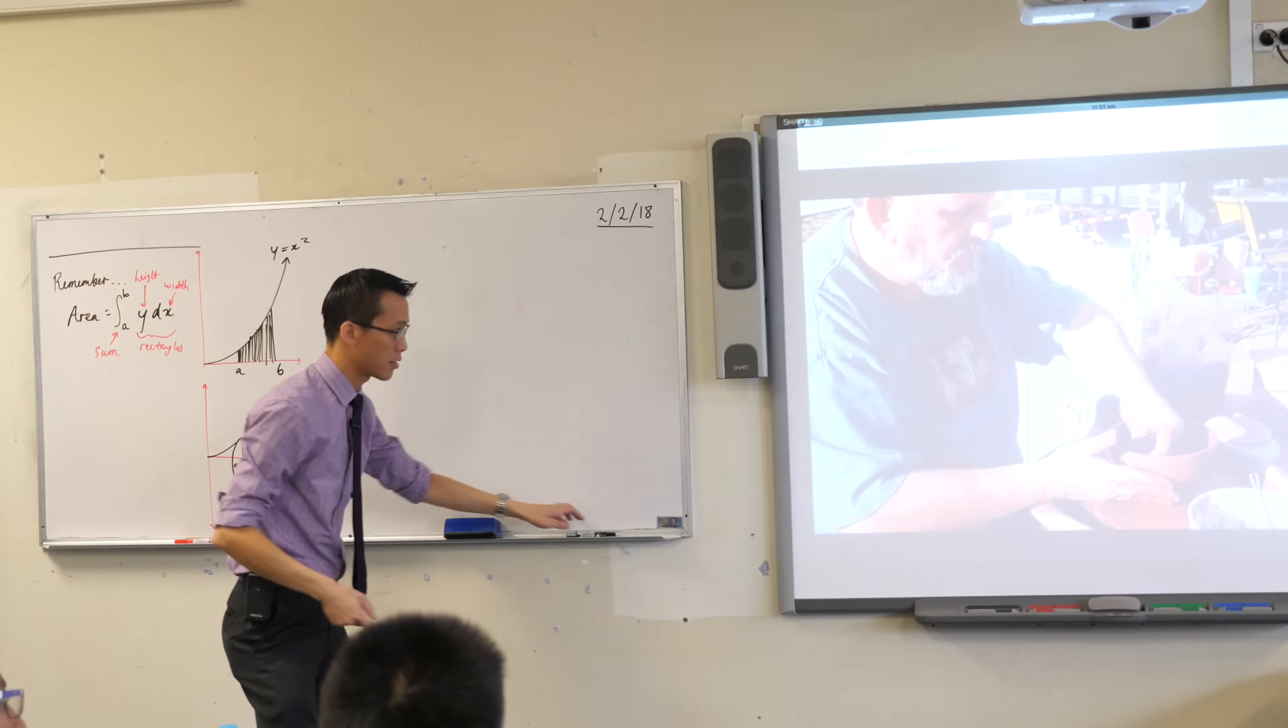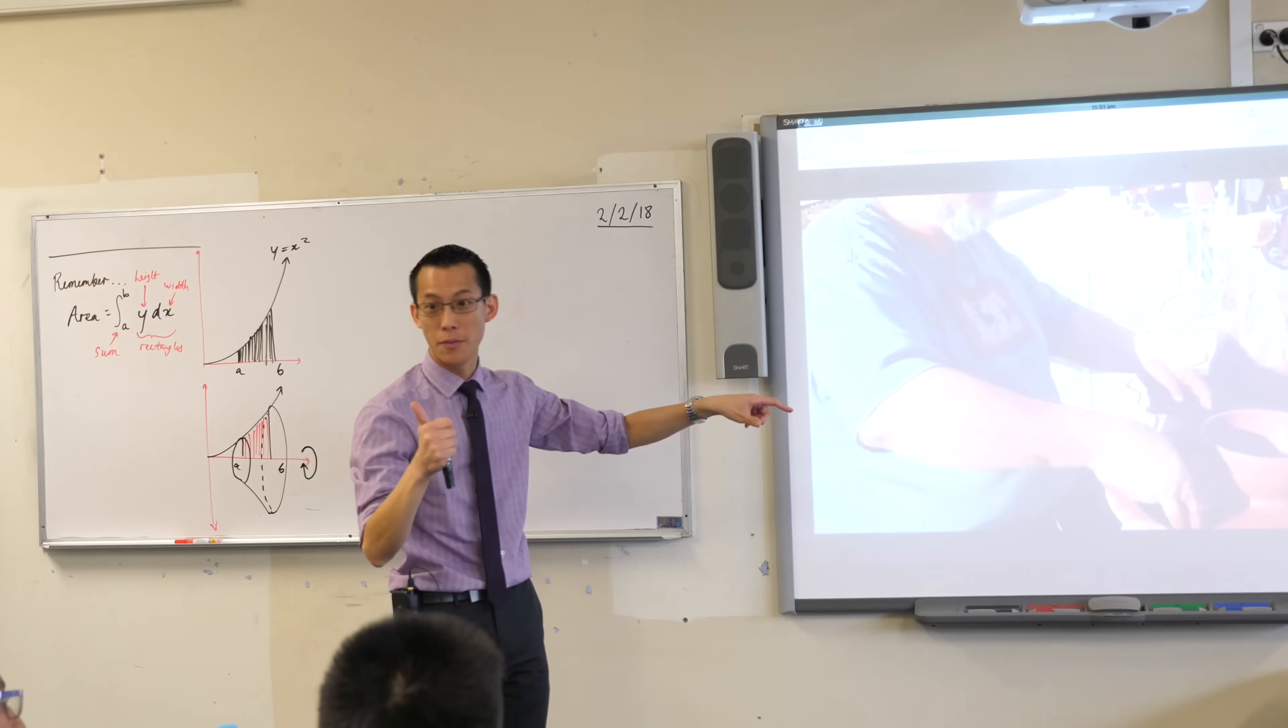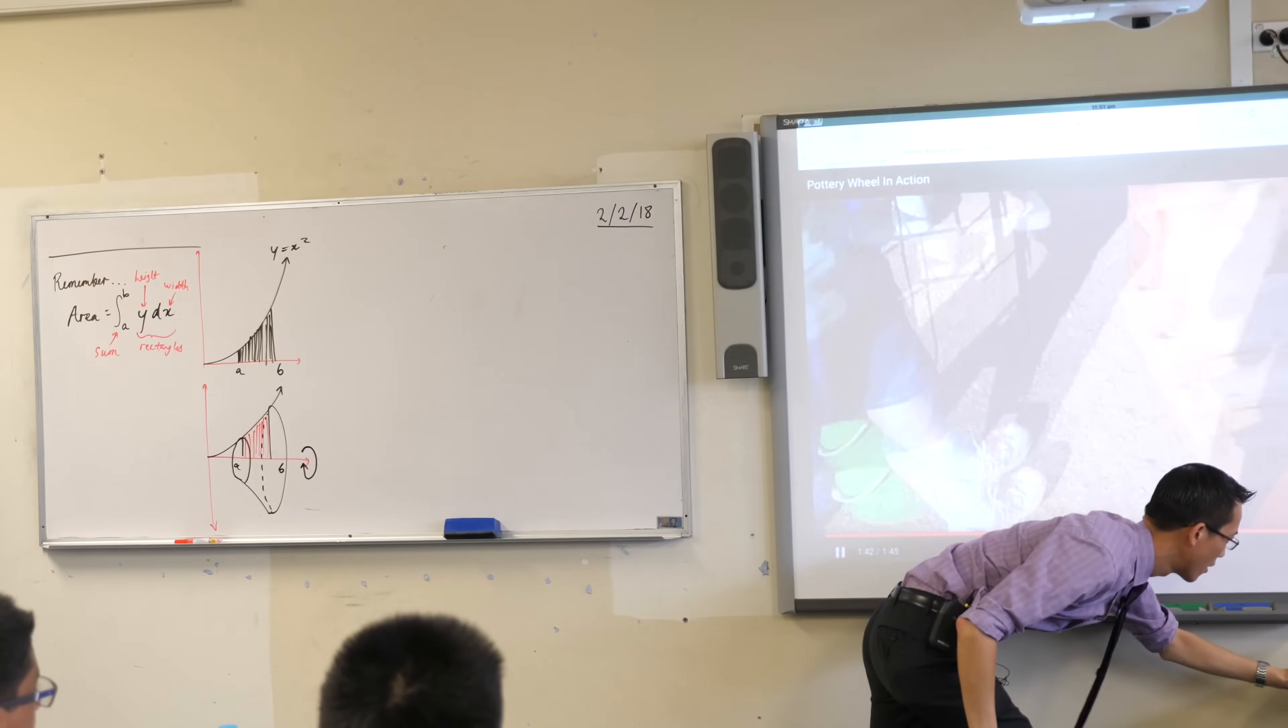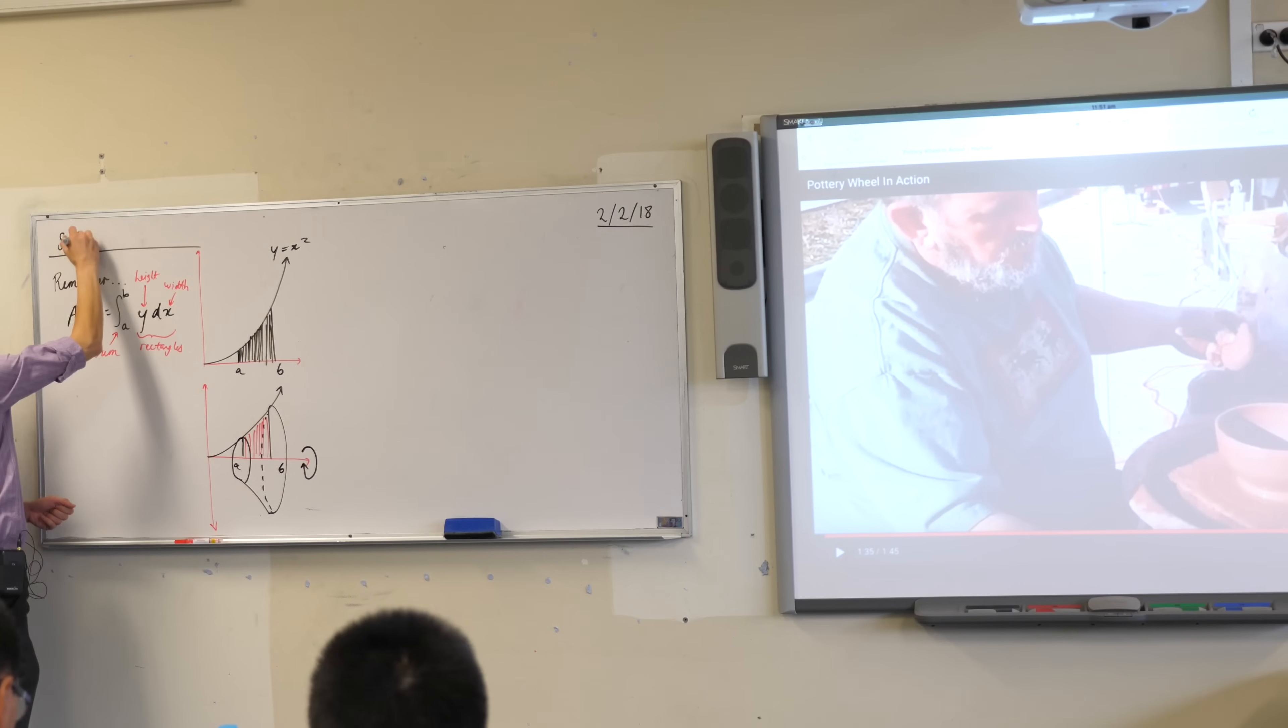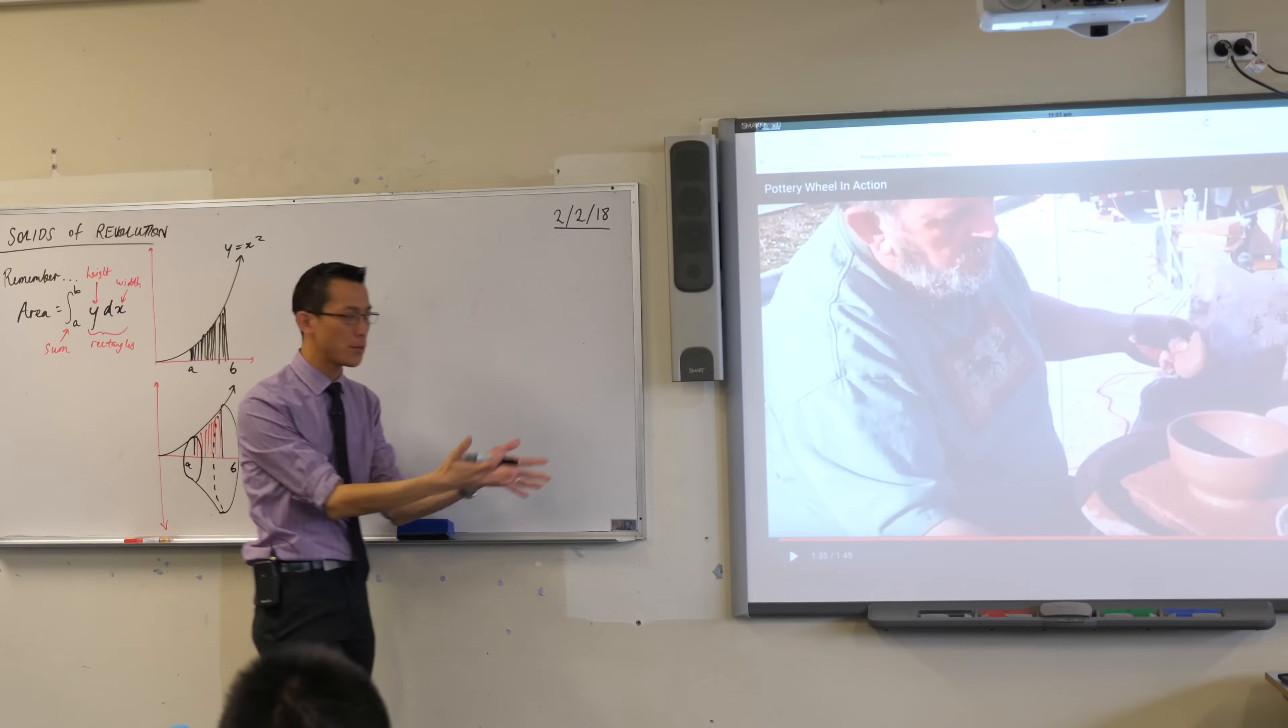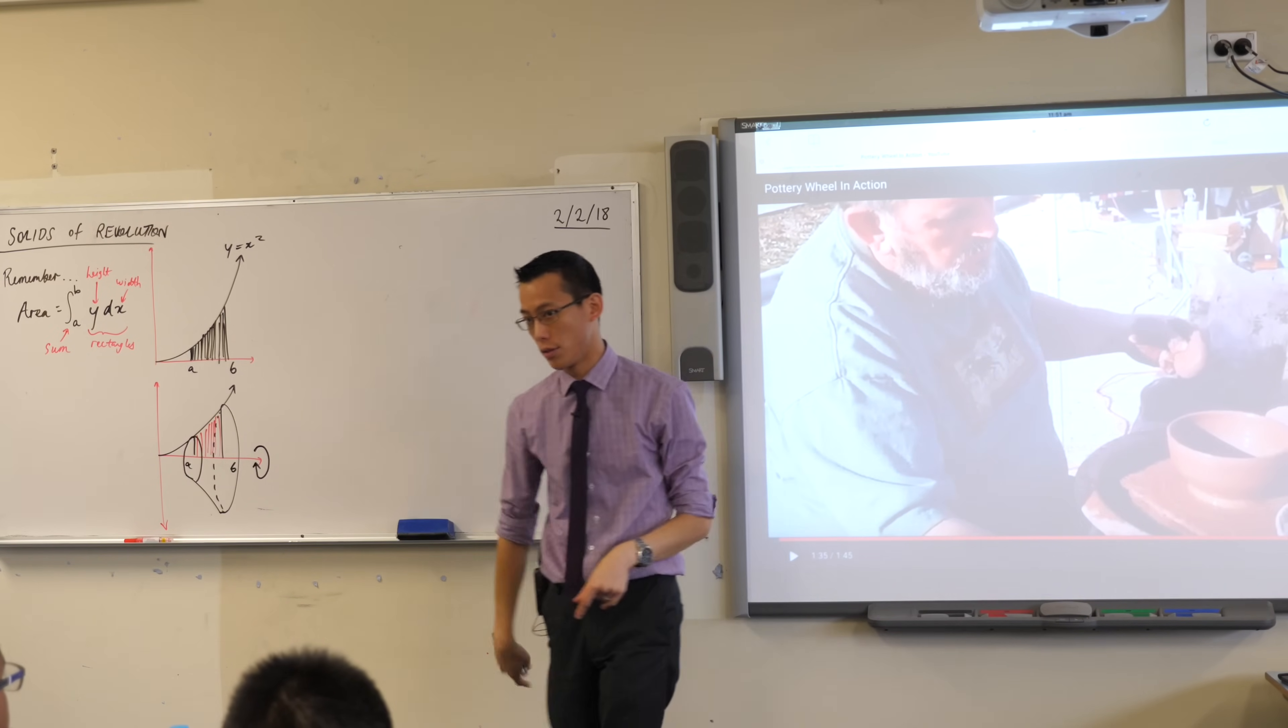So we call this object, he's almost finished with it, we call this object, because it's a solid and it's been formed by revolution, very originally, we call this object a solid of revolution. What we're interested in is what's the volume of this thing? How would you work out how much clay he's actually used? That would be the volume of this solid of revolution.